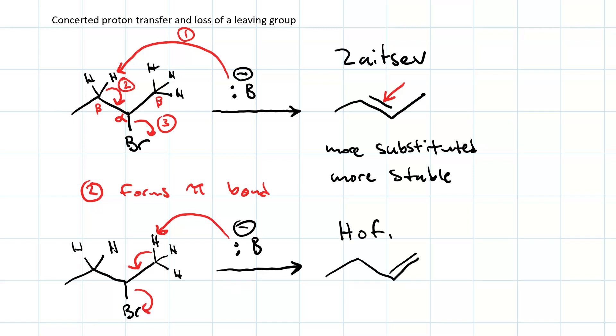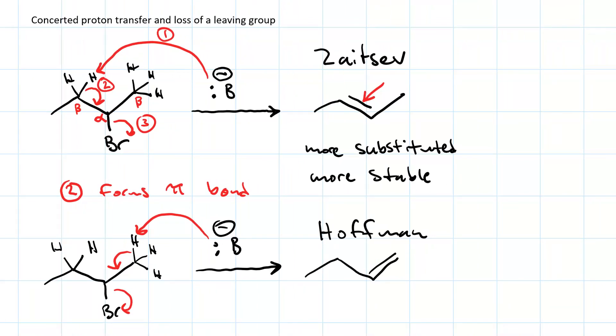Again, this is called a Hoffman elimination. So this is the less stable product because it is less substituted.